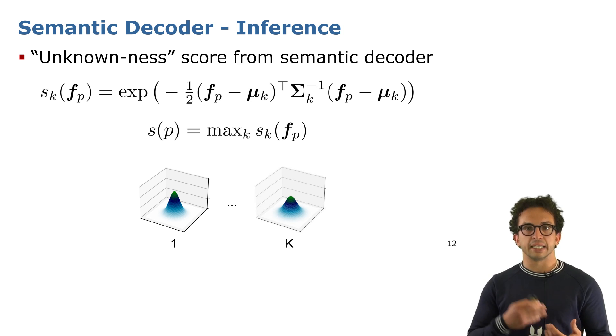We use the squared exponential kernel to compute a fitting score to each class k, between this pixel and each known class k. Then we take the known class that fits the best, the maximum score, and we obtain the first unknown score by doing just one minus.